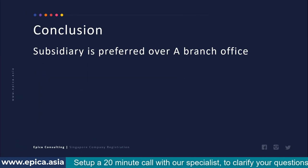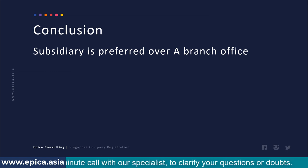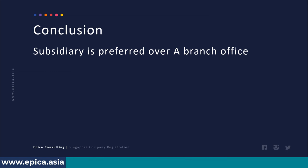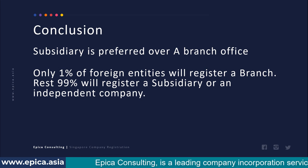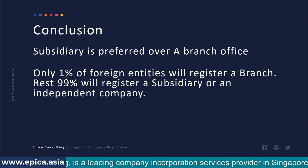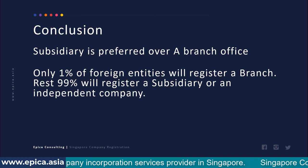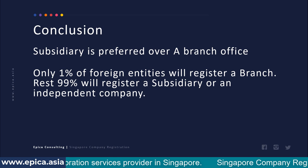In summary, unless you have a specific reason to register a branch office, a subsidiary is always preferred. Your first choice should be a subsidiary. What I have seen is that only 1% of foreign entities will register a branch, and the rest — 99% — will register a subsidiary or an independent company.